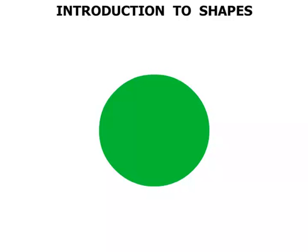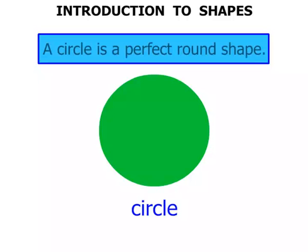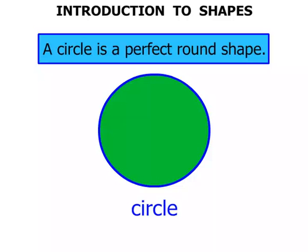What about this shape? Well, this is a circle. A circle is a perfect round shape. So, there we have it. A circle.